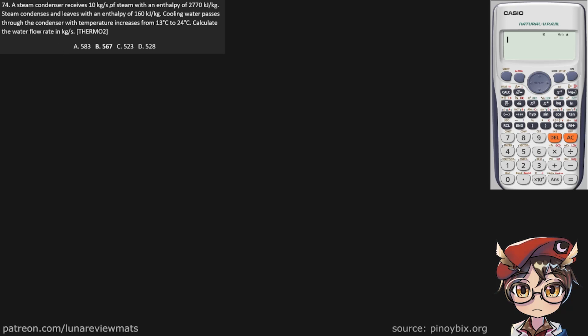A steam condenser receives 10 kilograms per second of steam with an enthalpy of 2,770 kilojoules per kilogram. Let's call that our MS, 10 kilograms per second.